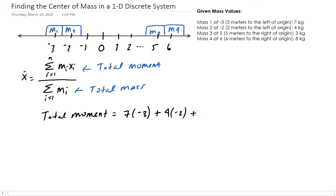For mass three, we have 3 kilograms, 5 units to the right of the origin. For mass four, it's 8 kilograms, 6 units to the right. Taking the sum of those gives us a total moment of 34.